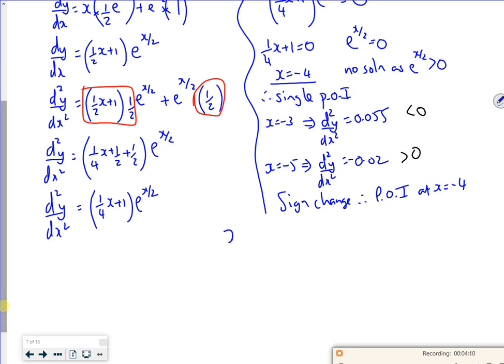So when x is minus 4, y was minus 4e to the minus 4 over 2.